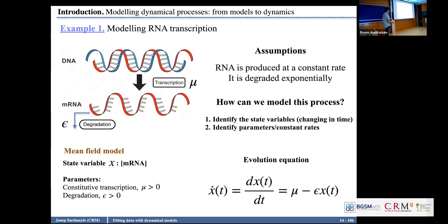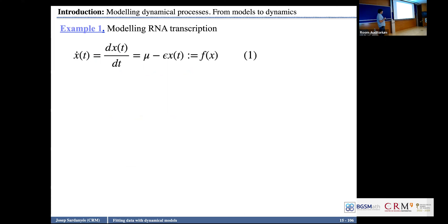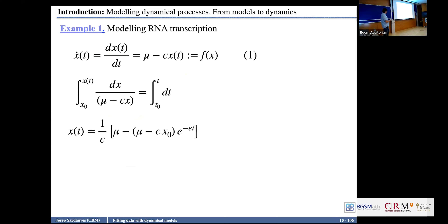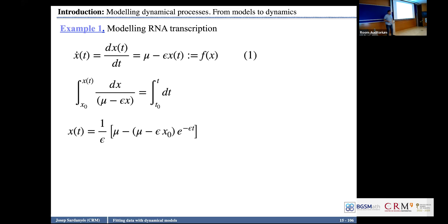This is a linear system, and we can obtain an analytical closed solution by separation of variables. We obtain explicitly a mathematical form for the value of X. If we know the initial condition and the values of the parameters, we can tell the value of the population for any time. This is a deterministic system.